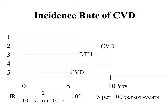Two divided by 40 gives us 0.05. We often report incidence rates not as a decimal but by moving the decimal point — in this case two places — to report it as 5 per 100 person-years. We can interpret this as: if we had 100 people, over the span of one year we'd expect about five of those people to develop cardiovascular disease.